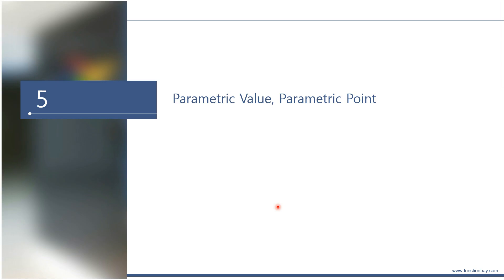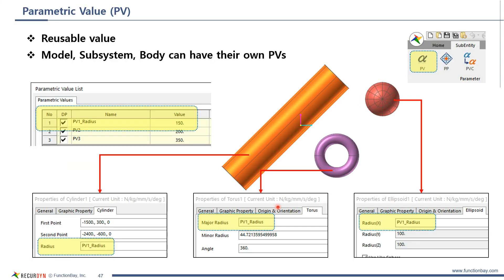Let me talk about parametric value and parametric points. A lot of RecurDyn users use these quite often. Parametric value is literally parametric value. They are mainly for reusability. This is one of the subentities. You can find it here.